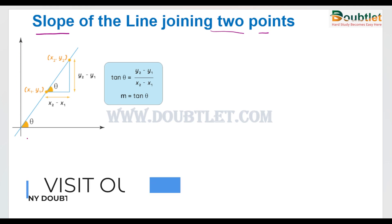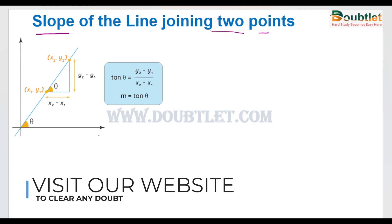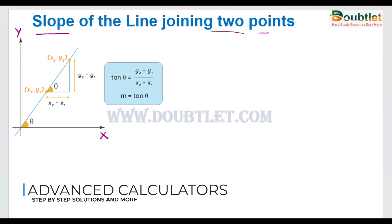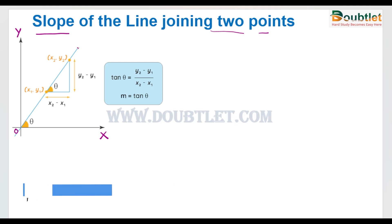I have already drawn a sample picture of the XY plane. This is the x-axis, this is the y-axis, and this is the origin. This is point P. We have to find the slope of the line joining point O to point P. Suppose this point represents x1, y1 and this point represents x2, y2. We can name these points as A and B.